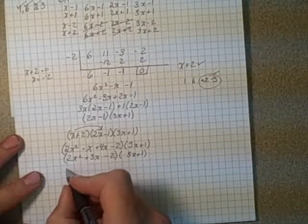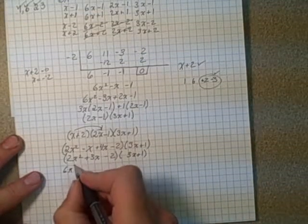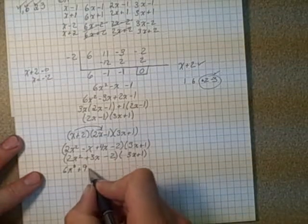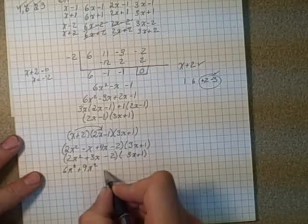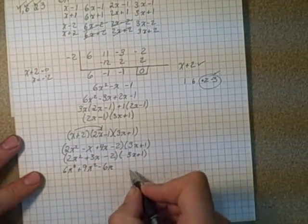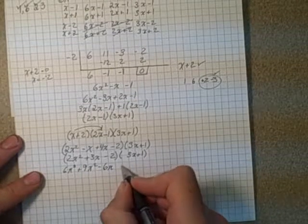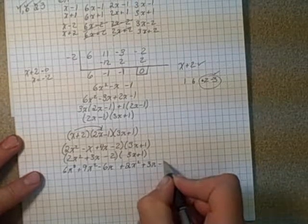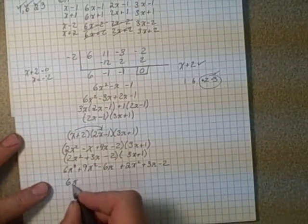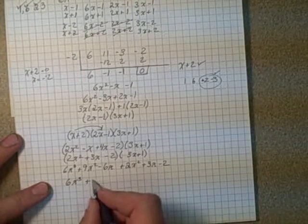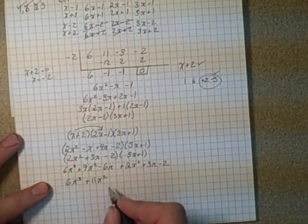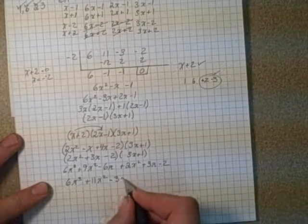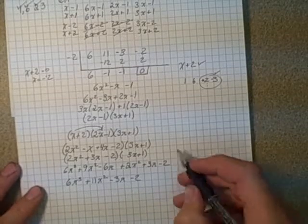3X times 2X squared is 6X cubed. Good sign there. 3X times 3X is plus 9X squared. 3X times negative 2 is negative 6X. Now go to the 1. This would be positive 2X squared plus 3X minus 2. Combining our like terms, we have 6X cubed and positive 11X squared and negative 3X minus 2. That's what we started with. So our check works.